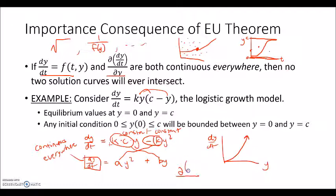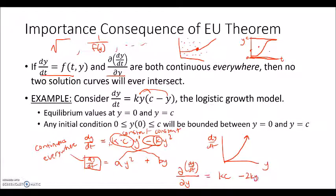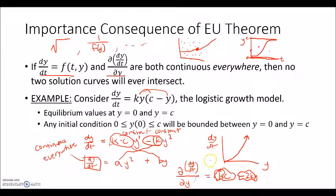The partial derivative of dy/dt with respect to y is computed by treating y as the variable. The derivative of kc·y is kc (constant times y, derivative is just the constant), and the derivative of −k·y² by the power rule is −2k·y. So the partial is kc − 2ky. Again, there is no value of y I can plug in that won't give a real-numbered output, so this partial derivative is also continuous everywhere.